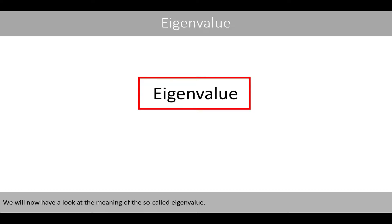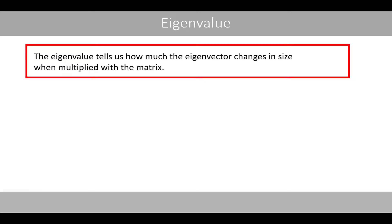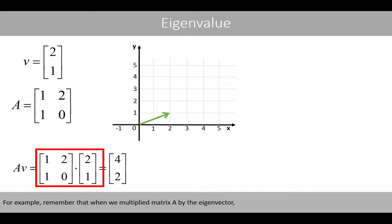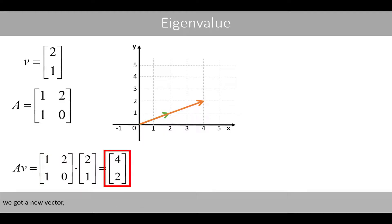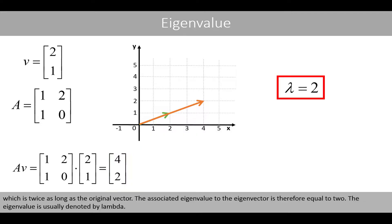We will now have a look at the meaning of the so-called eigenvalue. The eigenvalue tells us how much the eigenvector changes in size when multiplied with the matrix. For example, remember that when we multiplied matrix A by the eigenvector, we got a new vector which is twice as long as the original vector. The associated eigenvalue to this eigenvector is therefore equal to 2.